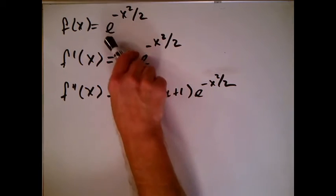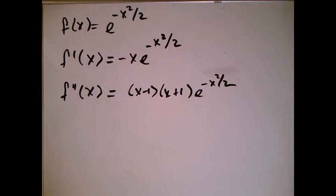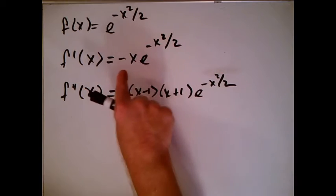Meanwhile I take a derivative. I see e to the blob, derivative e to the blob is e to the blob times the derivative of the blob, derivative of minus x squared over 2 is just minus x.